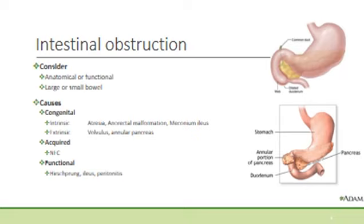Functional causes of intestinal obstruction might include Hirschsprung's disease, where you have aganglionosis of the bowel. It might be ileus due to sepsis or illness, and then peritonitis.